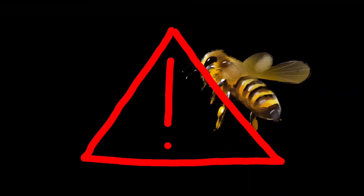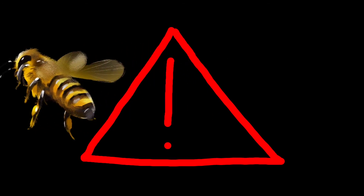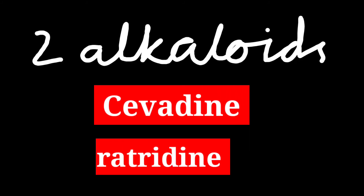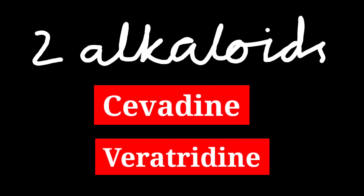Though it is harmful to the pollinator honeybee. There are two alkaloids present in Sabadilla: Cevadine and Veratridine. These two alkaloids actually act as contact poisons.